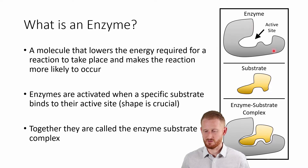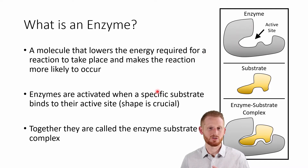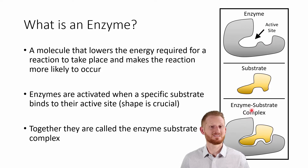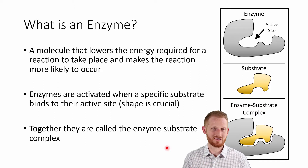In this diagram, this gray molecule is our enzyme, and our enzyme becomes active once the substrate specific to it binds. Here's our example substrate molecule. Notice that the shape of them fit together. When they come together into the enzyme-substrate complex, that is when we have our activated enzyme, and it's going to act on that substrate to do some sort of action.